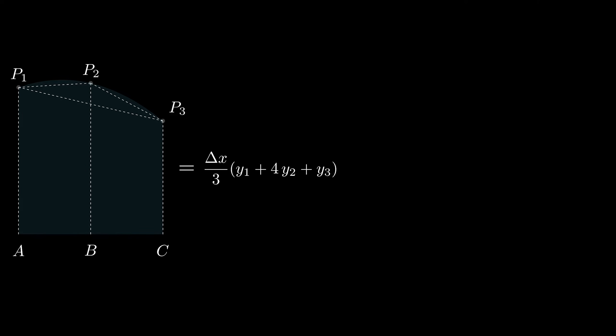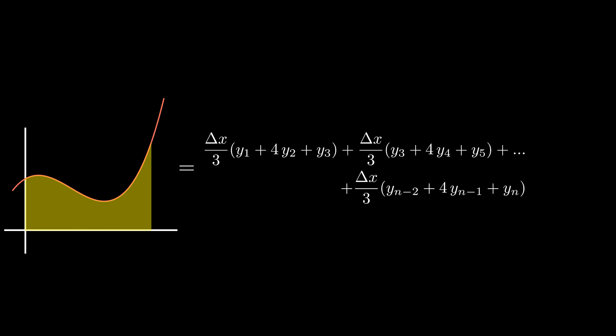And so, we find the area under one chunk. Adding the areas of all the other chunks, we get the area under the function. And there it is, the Simpson's rule.